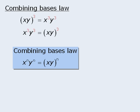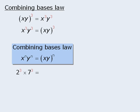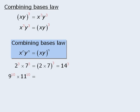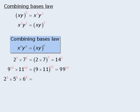To generalize, if we have a product where the two exponents are equal, we can rewrite this as the product of the two bases all to the power of that exponent. Note that the exponents must be equal to apply this law. For example, since 2 and 7 are both raised to the power of 3, we can rewrite this as 2 times 7 all to the power of 3, which is the same as 14 to the power of 3. Similarly, we can rewrite this as 9 times 11 all to the power of 10, which equals 99 to the power of 10. Finally, since 2, 5, and 6 are each raised to the power of 8, we can rewrite this as 2 times 5 times 6 all to the power of 8, which equals 60 to the power of 8.